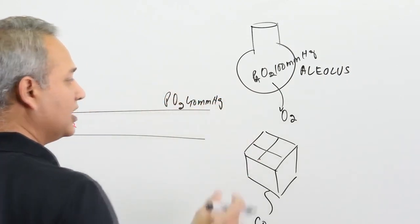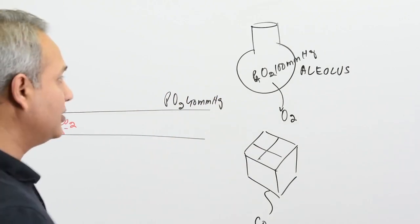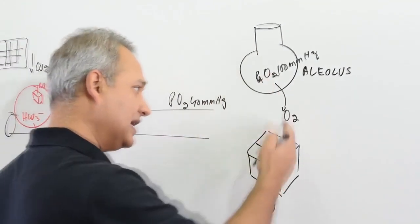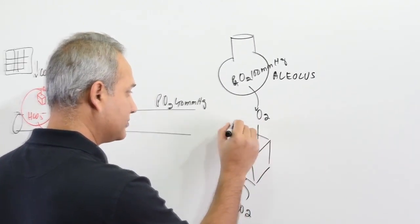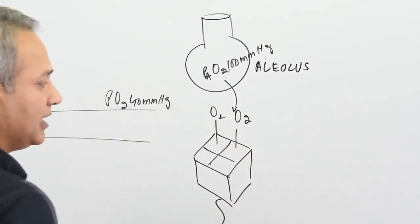So there is a 60 millimeters of mercury gap. With that gap, oxygen comes in. When oxygen comes in, it loads onto the hemoglobin.